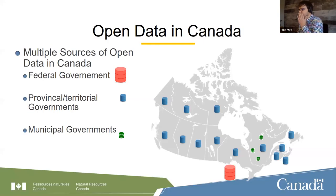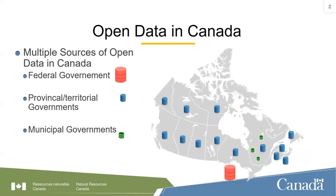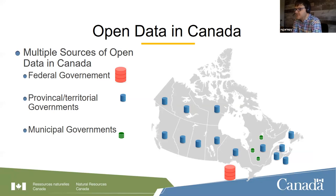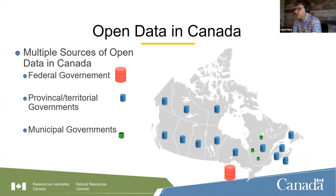To start, let's have an overview of the data availability across Canada. Regarding governmental open data sources, we have three government levels: data coming from the Government of Canada, open data from 13 provincial and territorial sources, and a lot of municipalities also disseminating open data.